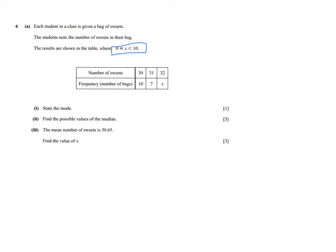For one point, they ask us to state the mode. The mode is the piece of data with the highest frequency — the one that occurs the most. There are 10 bags with 30 sweets and only 7 bags with 31 sweets, so 30 sweets occurs more frequently. For 32 sweets we have X bags, but X is less than 10, so for sure the mode is 30. Don't write down 10 as the mode — 10 is the frequency. The mode is 30.